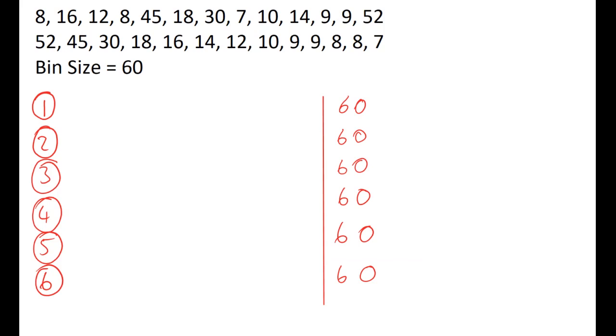We then simply work through in the same way. So our first number is this 52 and we're going to place that in the first bin, and it leaves us with a space of 8 remaining in there.